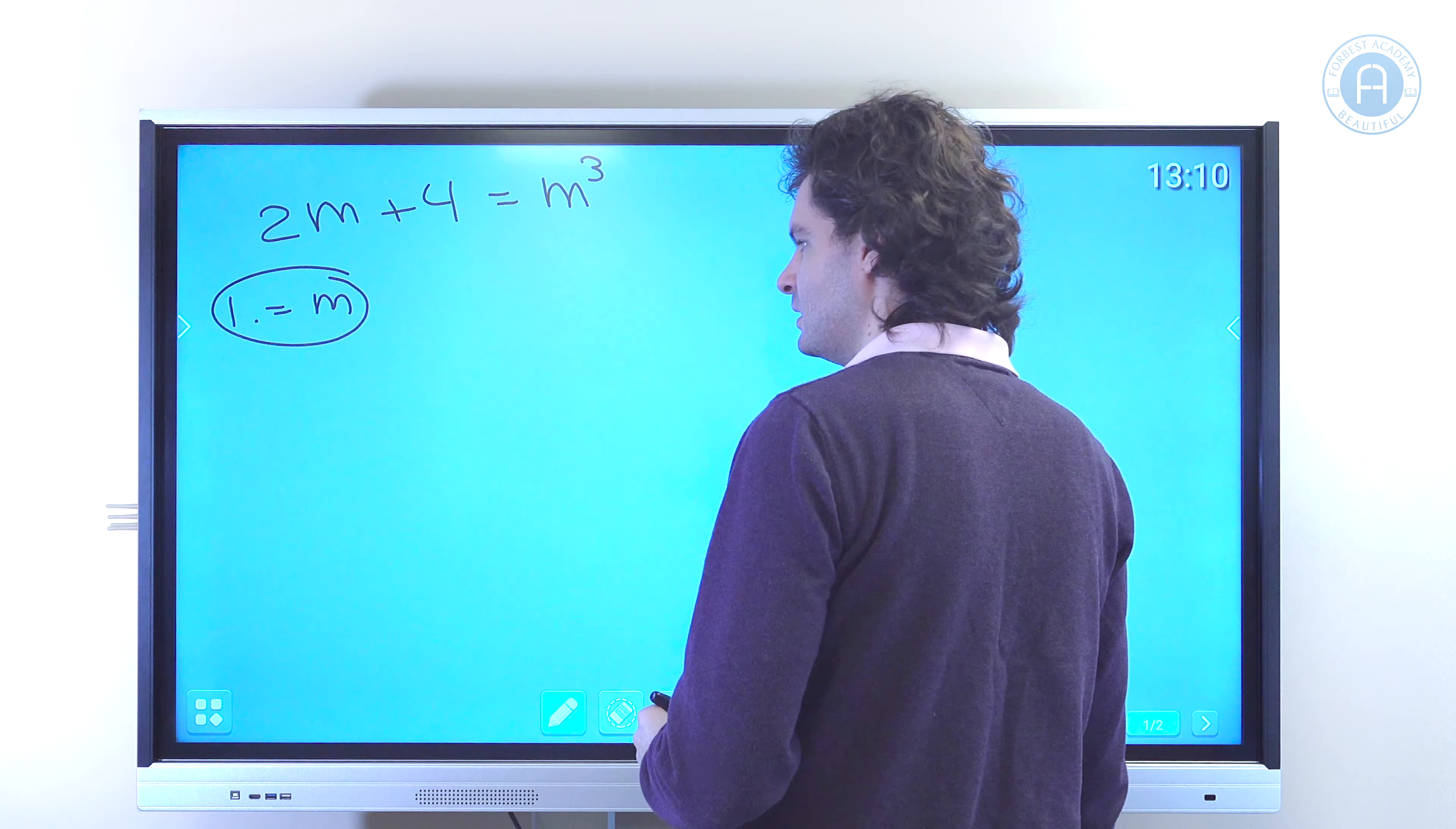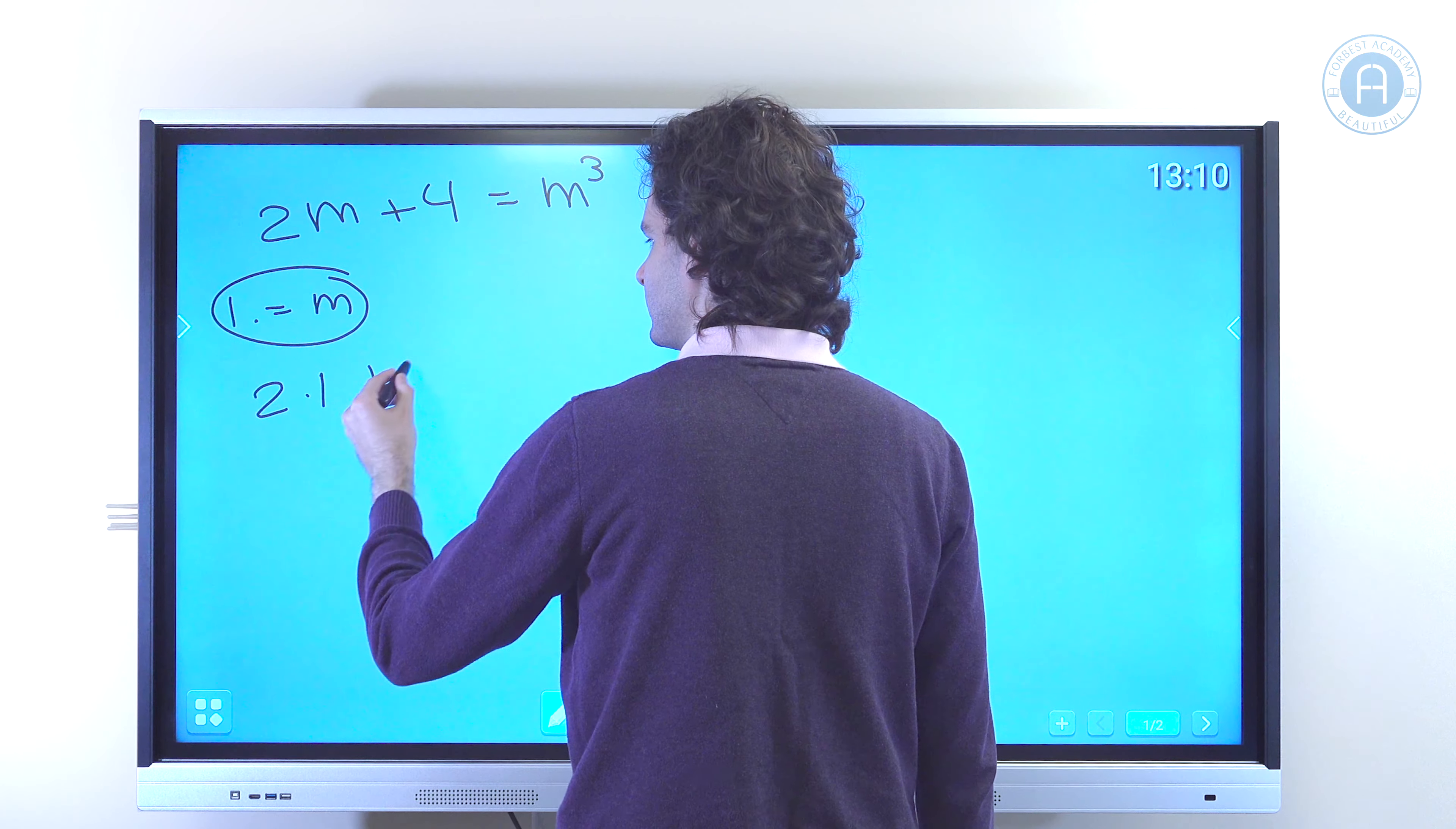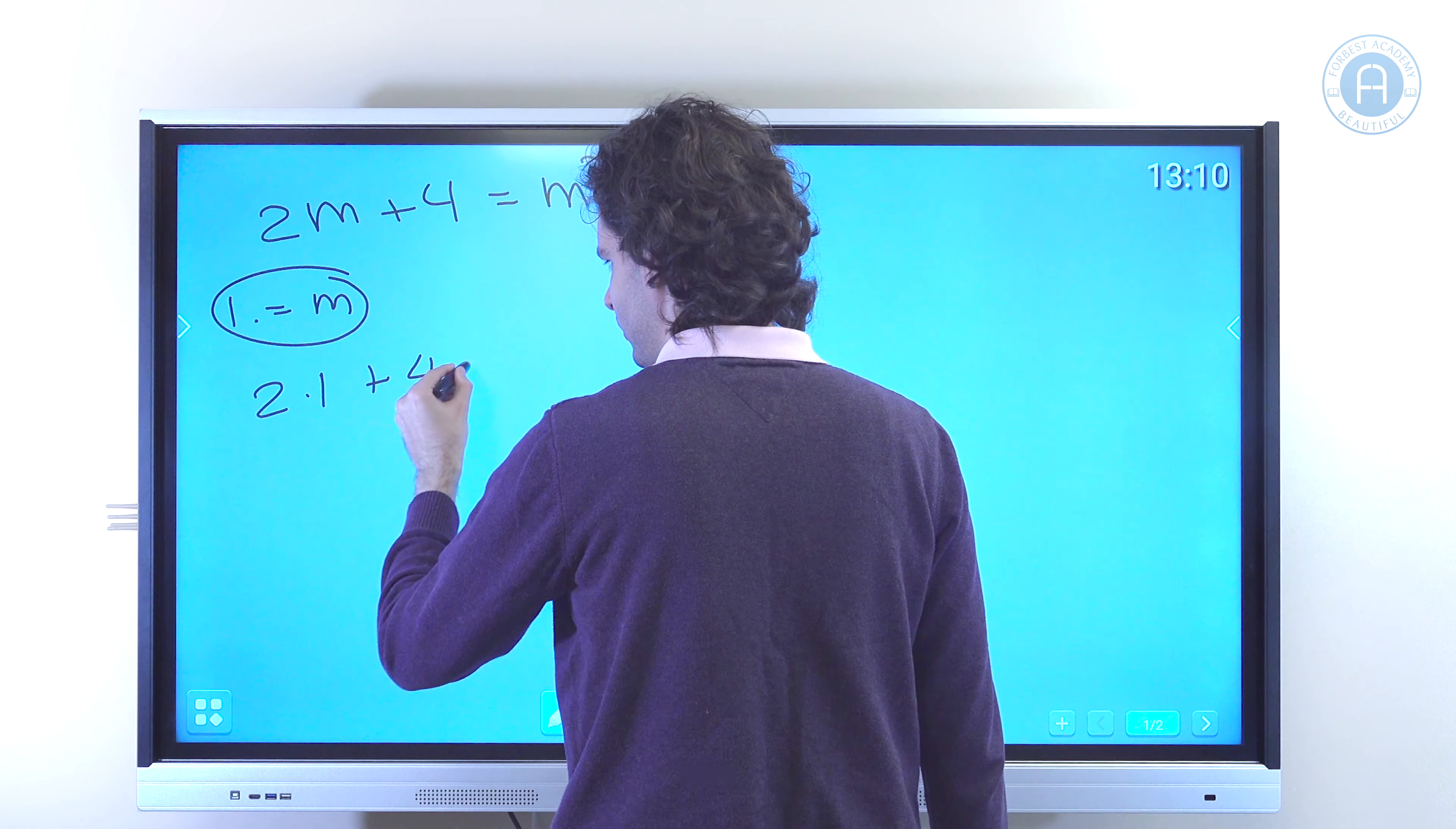If m has the value of 1, we're going to have from this equation 2 times 1 plus 4. Well, 2 times 1 plus 4 is the same thing as 2 plus 4, that equals 6.